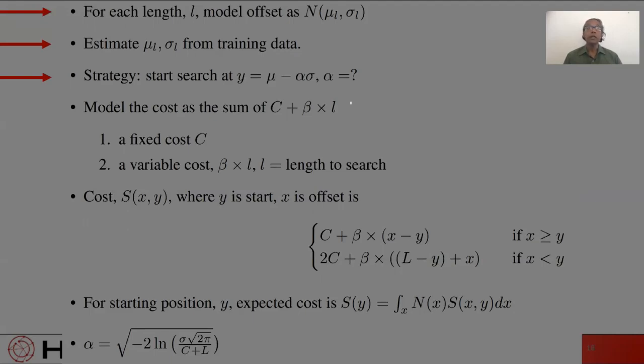Remember from our previous example, where we were looking for the fox, that it is better to undershoot than to overshoot while guessing the offset. So we call the start position y and write y as mu minus alpha times sigma. We have mu and sigma from the data. Question is, how do we go about finding alpha?